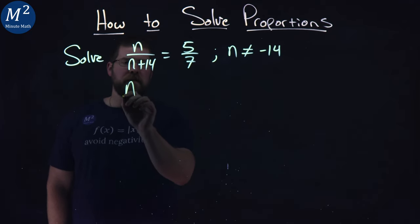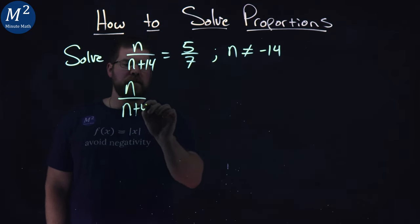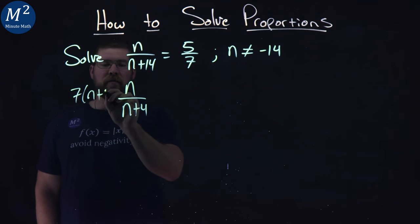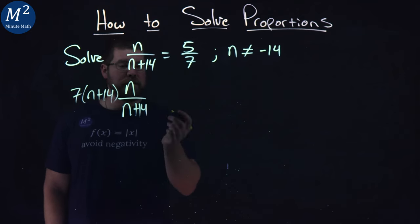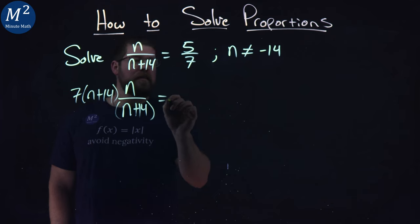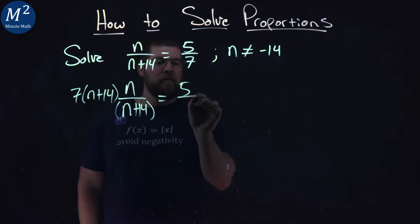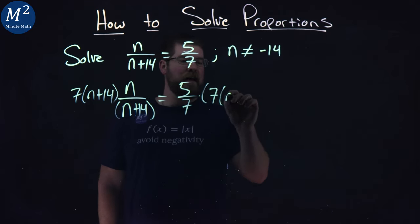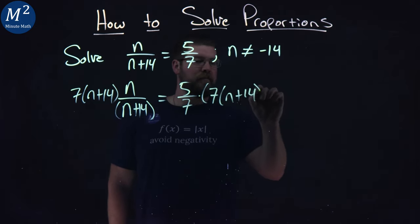So I'm going to rewrite this fraction, n over n plus 14, and I'm going to multiply it by 7 times n plus 14. And that's equal to, again, 5 over 7 times 7 times n plus 14, as such.